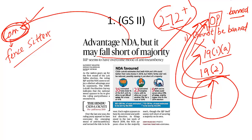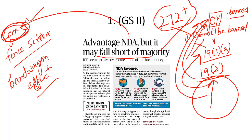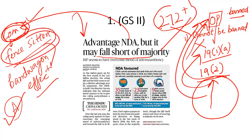Then there are fence-sitters, and this is what we call the bandwagon effect. Nobody wants to be on the losing side or waste their vote. If I am a fence-sitter — meaning I have no ideological preferences — once opinion poll results are released and I see party A is leading, I will vote for party A because I don't want to be on the losing side. Opinion polls have the tendency to influence these fence-sitters, and that is the bandwagon effect.